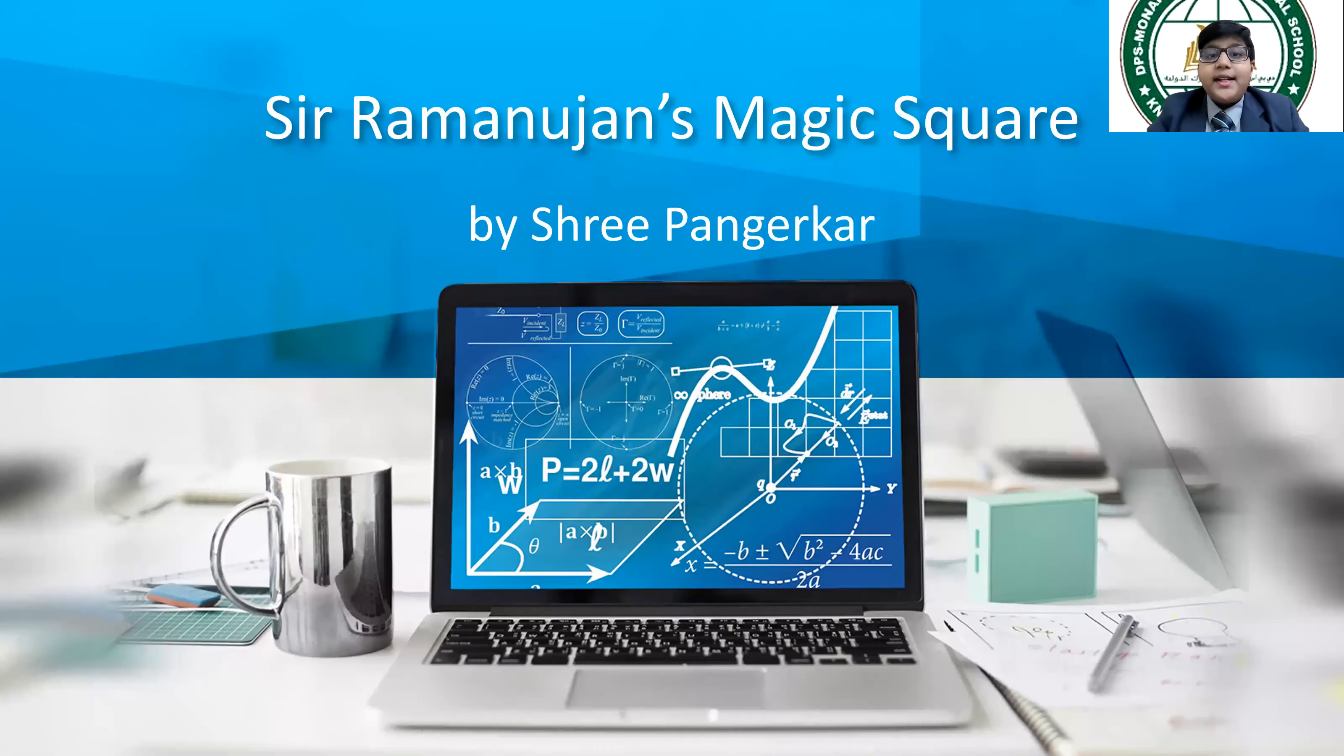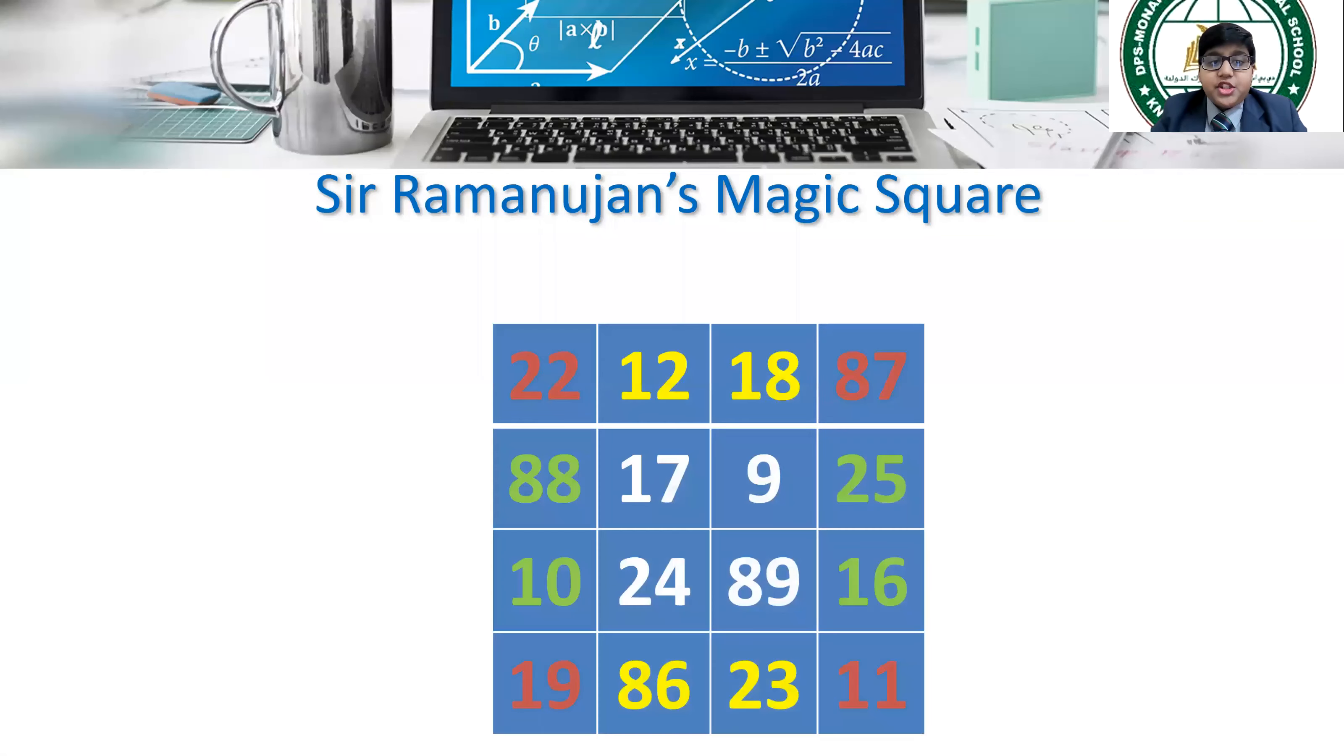One of the greatest mathematicians in Indian history is Sir Srinivas Ramanujan. He discovered many math formulas that amaze the world, but today, myself, Sri Pangerkar from class 7a, is going to talk about one of his interesting discoveries, the Ramanujan magic square.